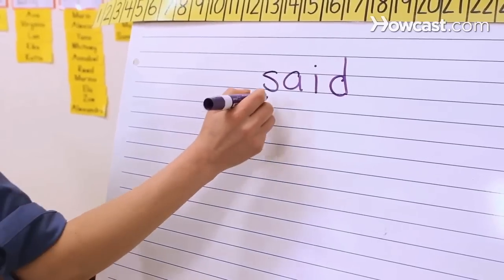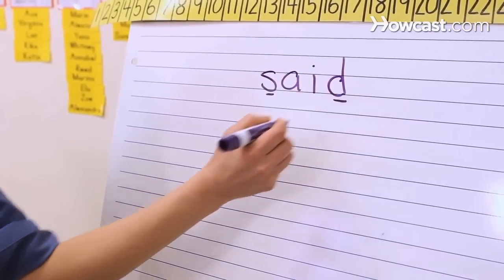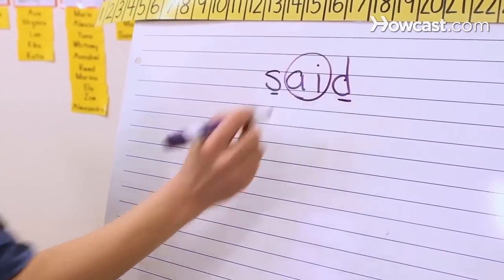Children need to be explicitly taught spelling rules and orthographic patterns because English, 90% of the time, is a phonetically regular language. And so if we teach children what those paired correspondences are between letters and sounds, then they are going to be better equipped to spell the words that they want to write and read unfamiliar words that they encounter in text.